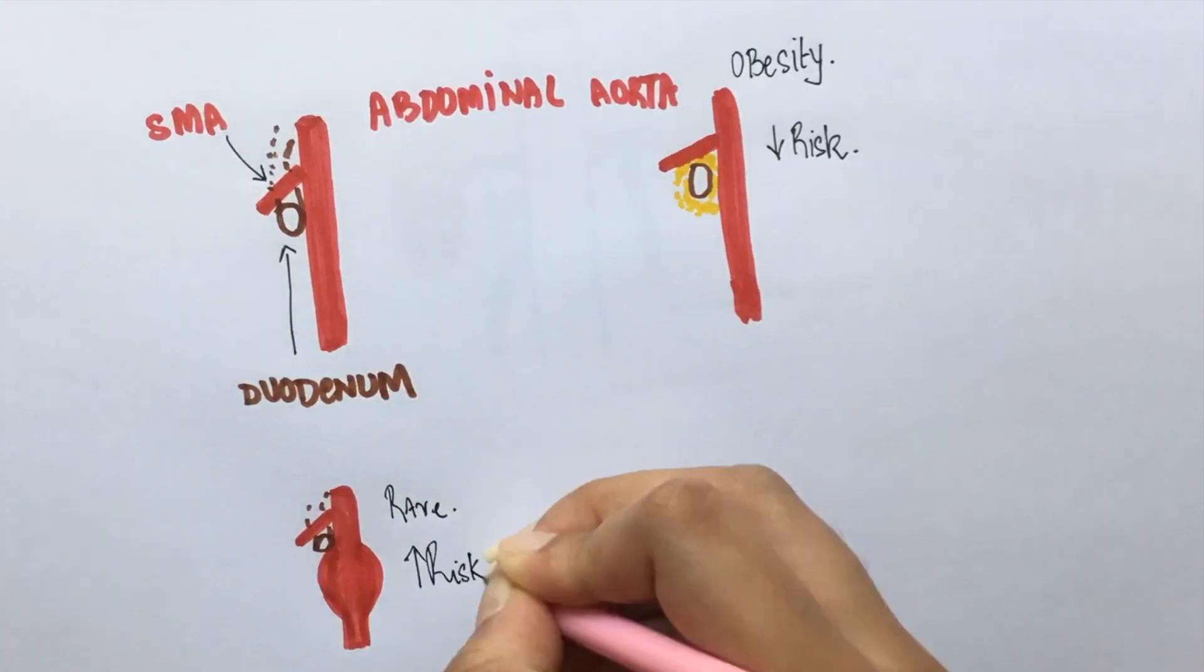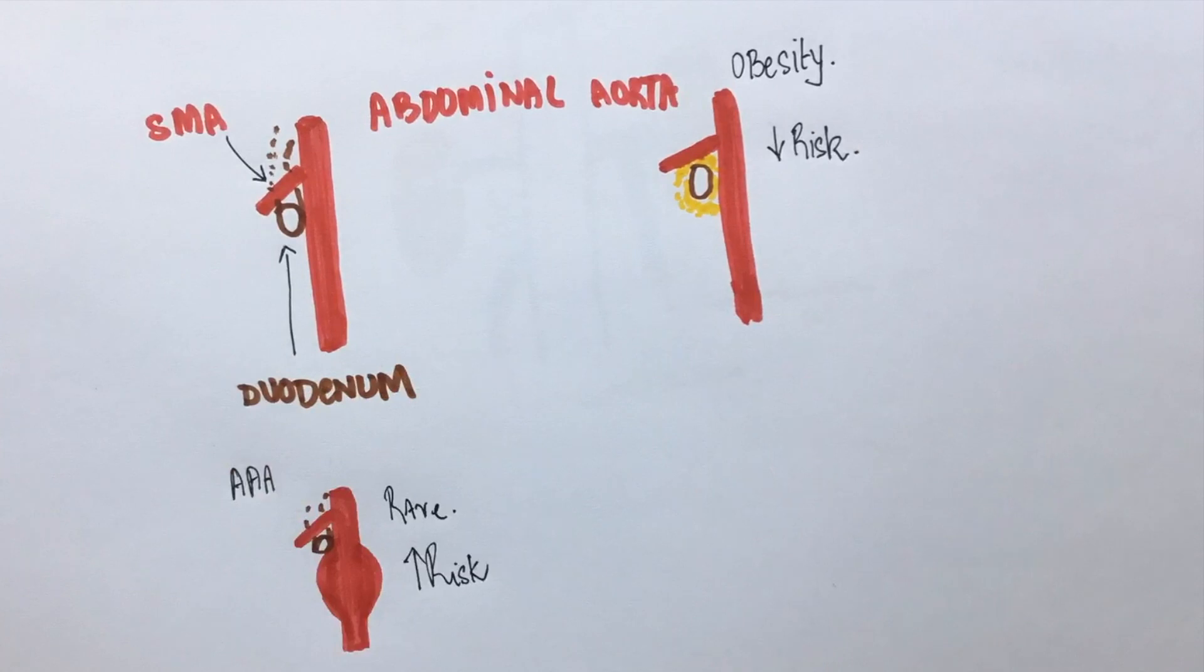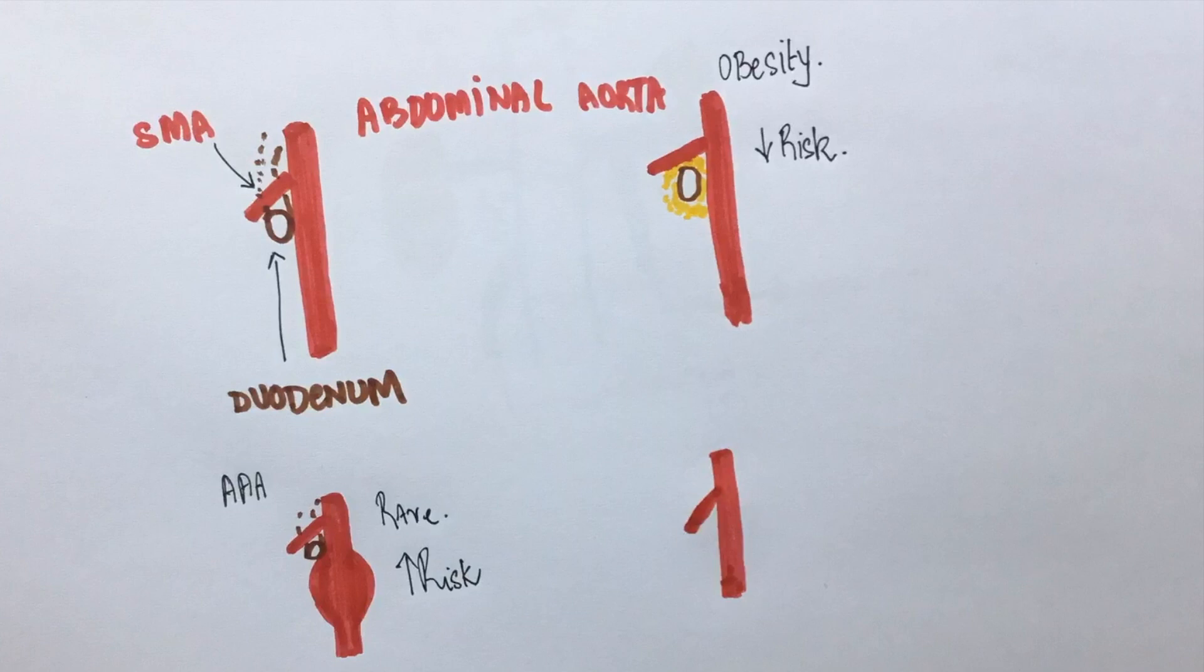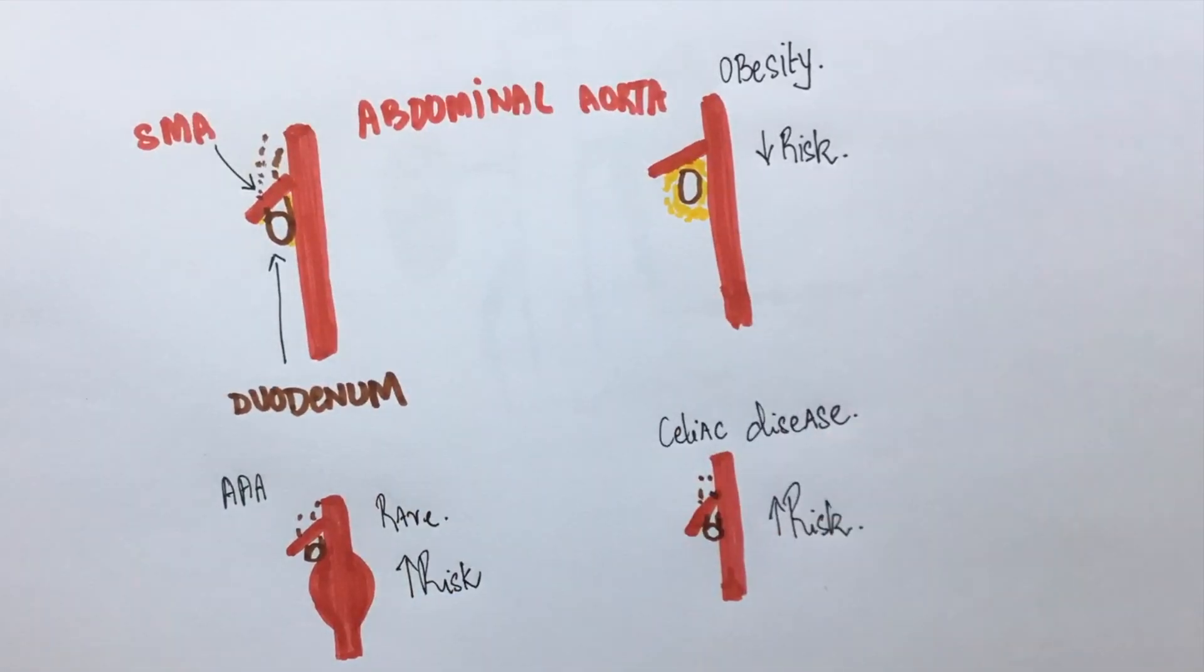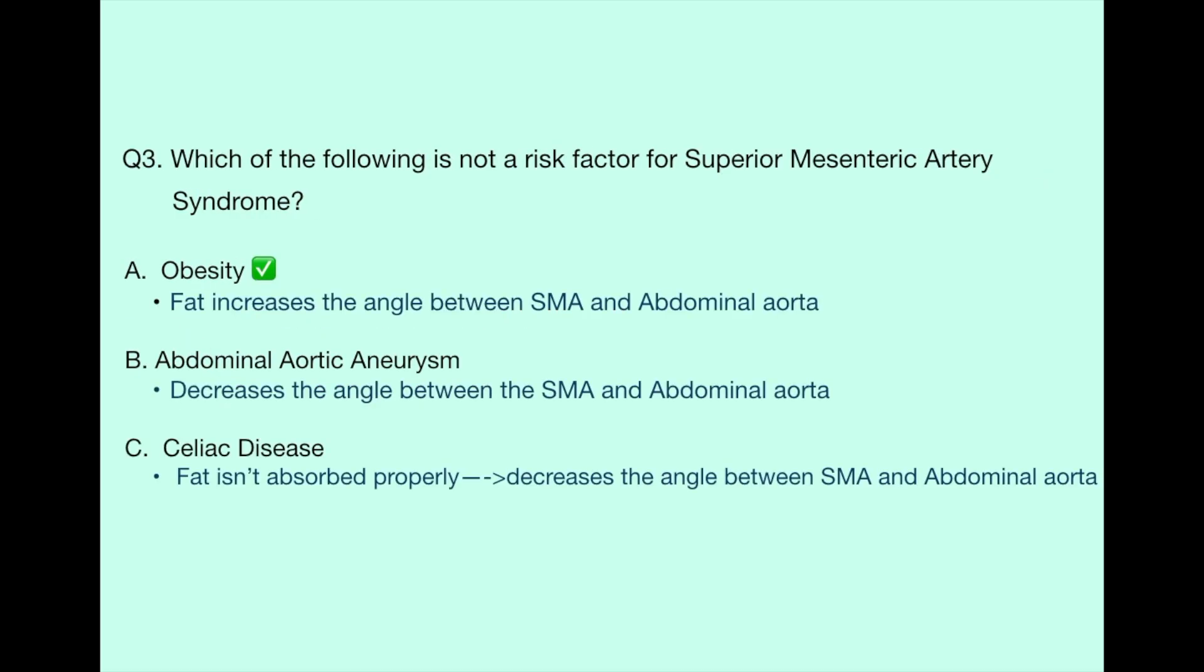In celiac disease, there is reduced absorption of fat from the intestine. This leads to depletion of fat here, resulting in a decrease in this angle, making it easy for the duodenum to be compressed. That's why celiac disease could also be a risk factor for superior mesenteric artery syndrome.